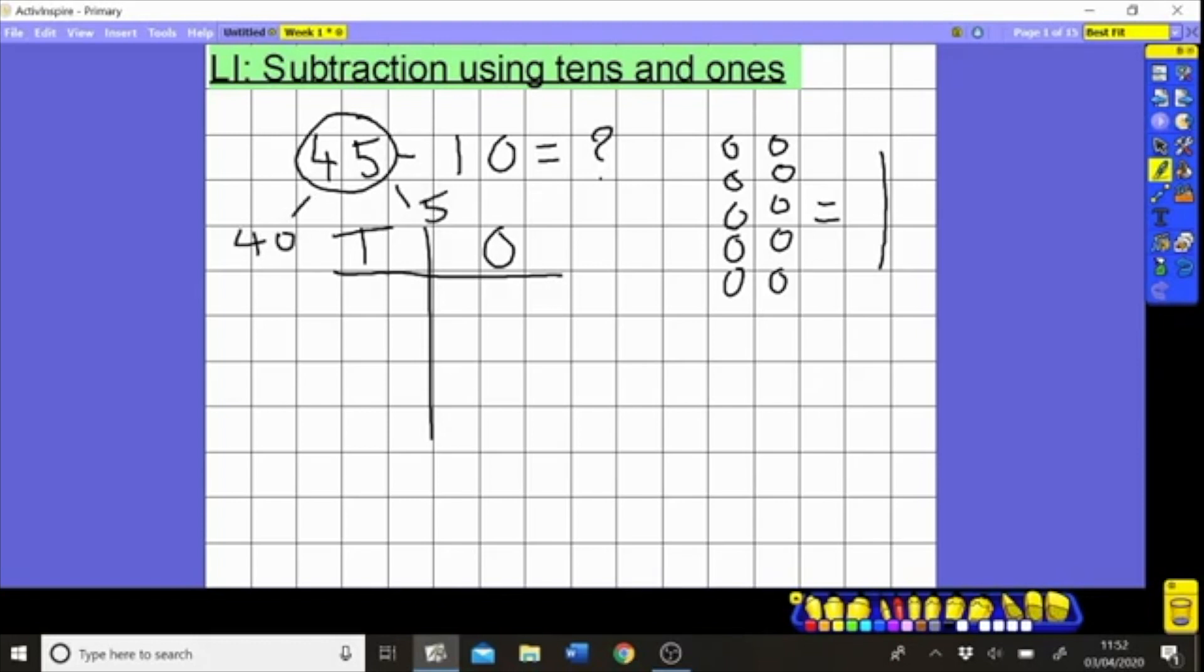So we draw our four tens and we draw our five ones. Now what I want to do is subtract one ten. That's easy to do - I don't need to touch any of these ones here because I'm actually taking away one ten straight away.